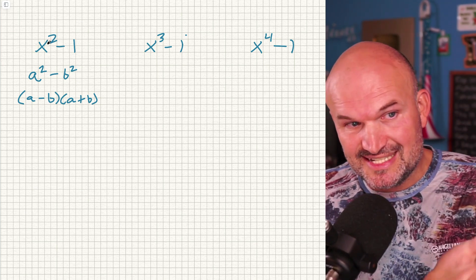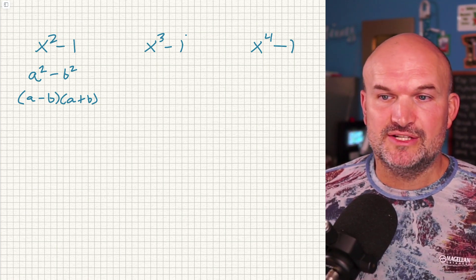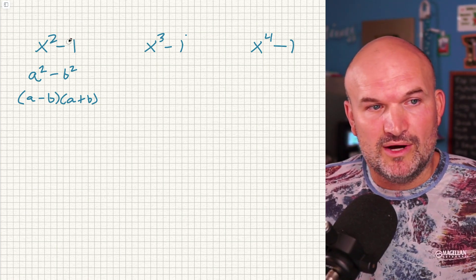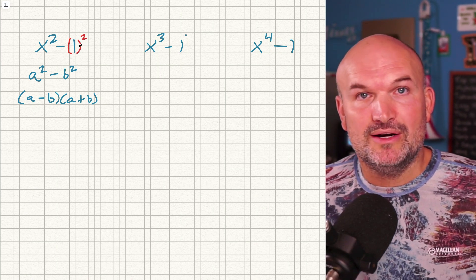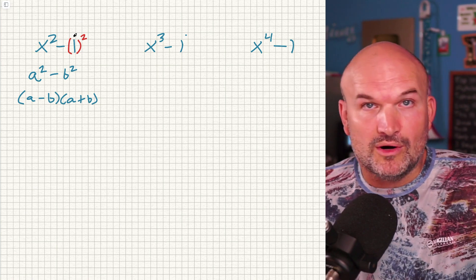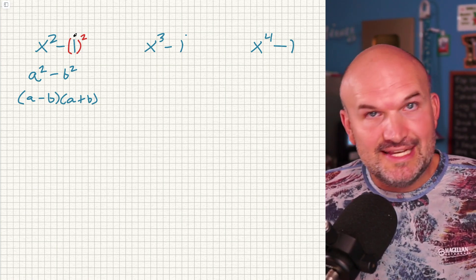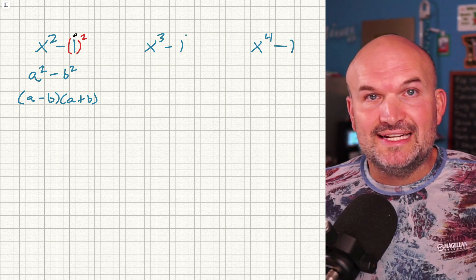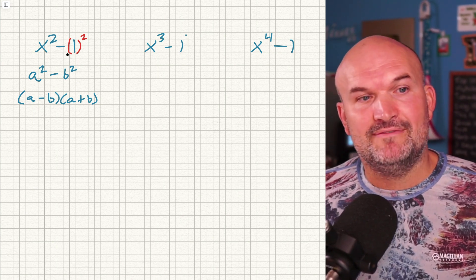It's important to make sure we recognize when we have that difference of two squares — it's when the first term is squared, which you can see x is squared, but also when the second term is squared. A lot of times students don't see 1 as being squared, but 1 is a perfect square. You can think of 1 as 1 squared, 4 as 2 squared, 9 as 3 squared, 16 as 4 squared. Always make sure you recognize those perfect square numbers.